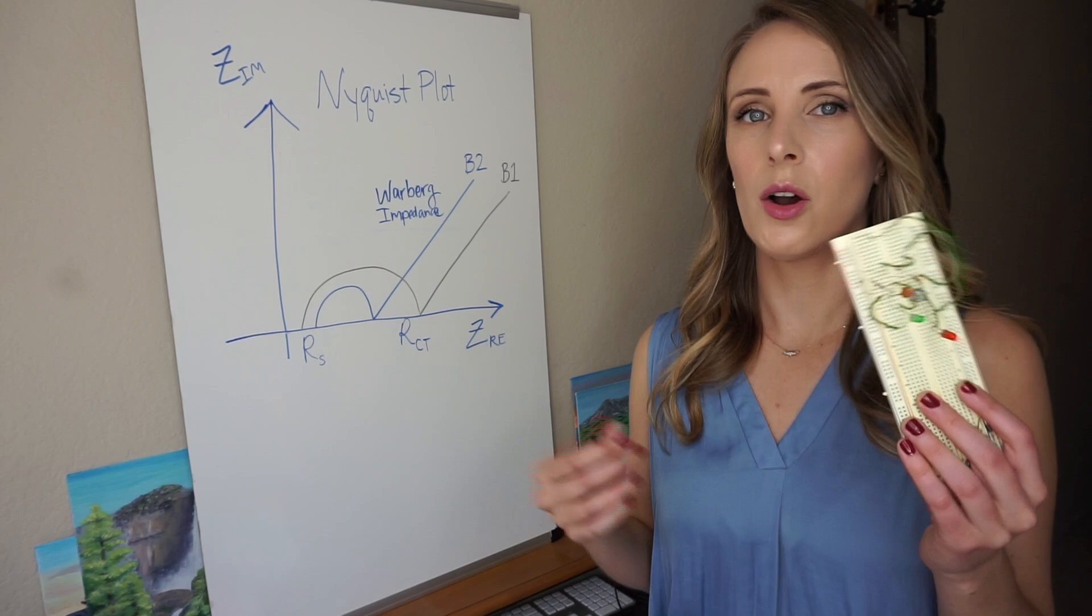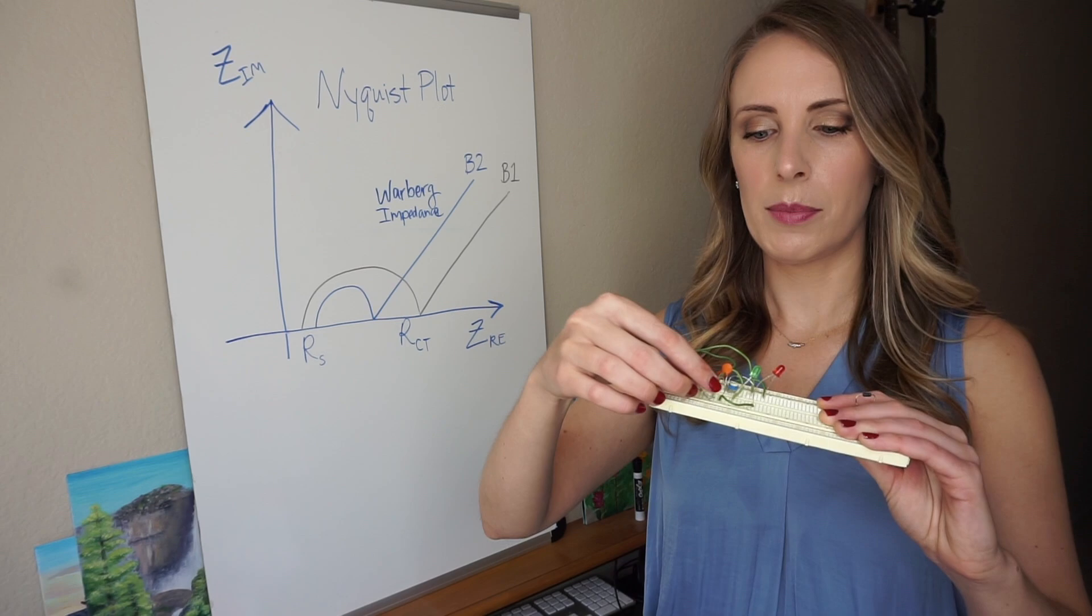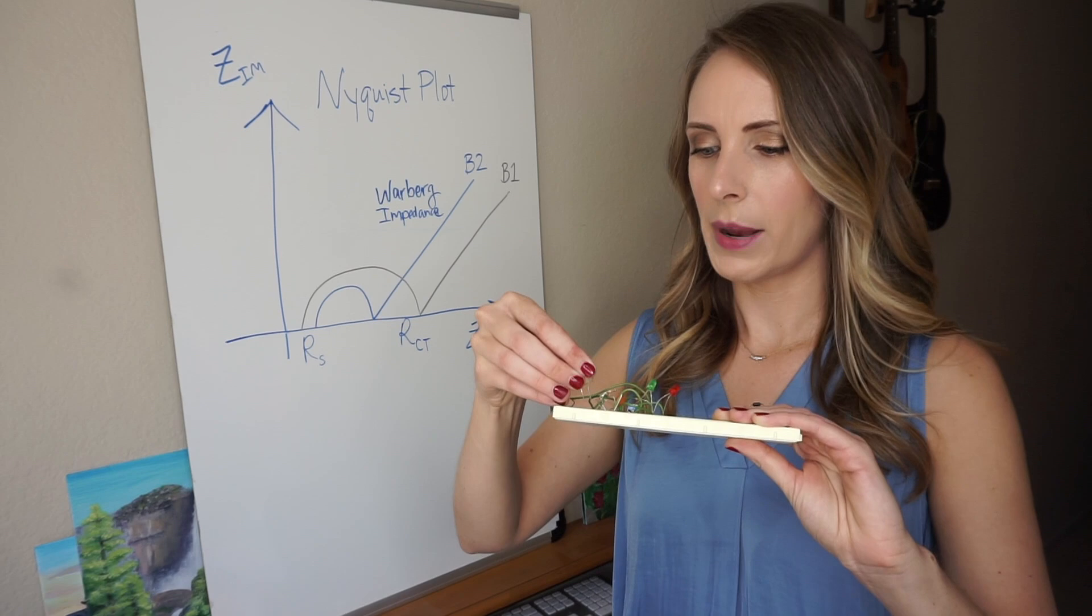And one way to do this is by creating an equivalent circuit. By equivalent circuit I just mean that instead of just saying the battery materials do these things, you could say, oh well, if we put a capacitor and a resistor in series or in parallel,